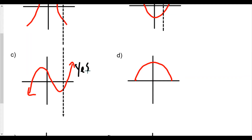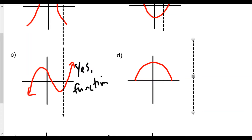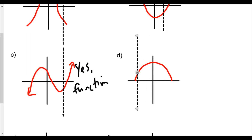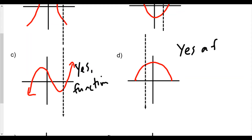Yes, function. Next vertical line — we move it across here. For D, this semicircle: as the vertical line moves across, it's only hitting one point each time. So we see this works out the same way — yes, a function.